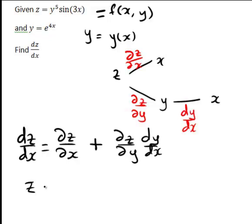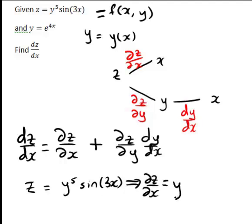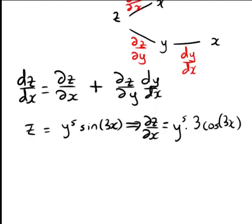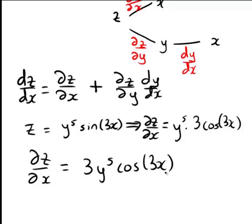We were told that z was equal to y to the 5 times sine 3x. Therefore, to work out the partial derivative of z with respect to x, we treat y as a constant. So y to the power of 5 stays the same, and sine 3x differentiates to become 3 cos 3x. Therefore, the partial derivative of z with respect to x is 3y to the 5 times cos 3x.